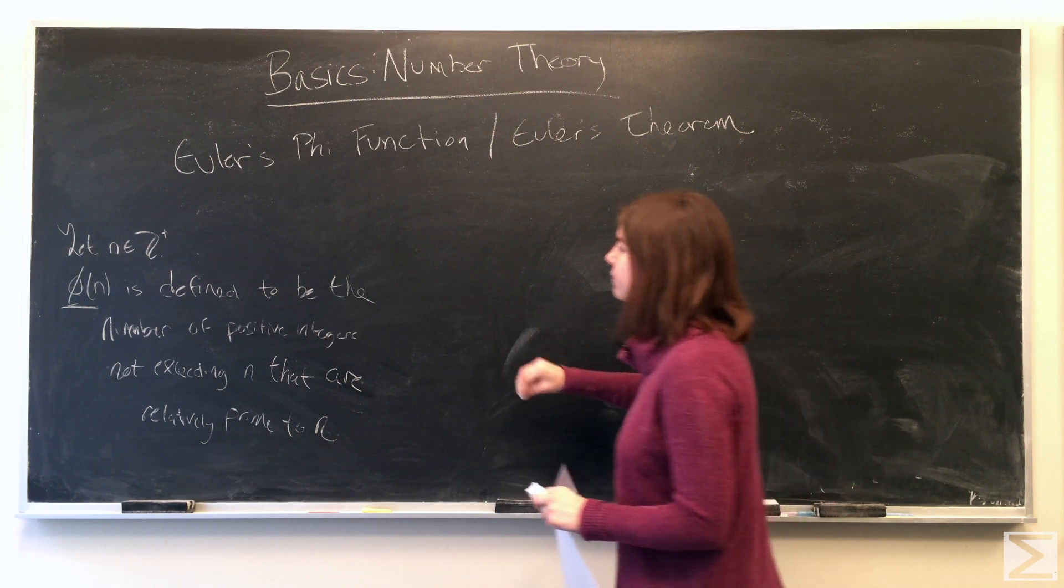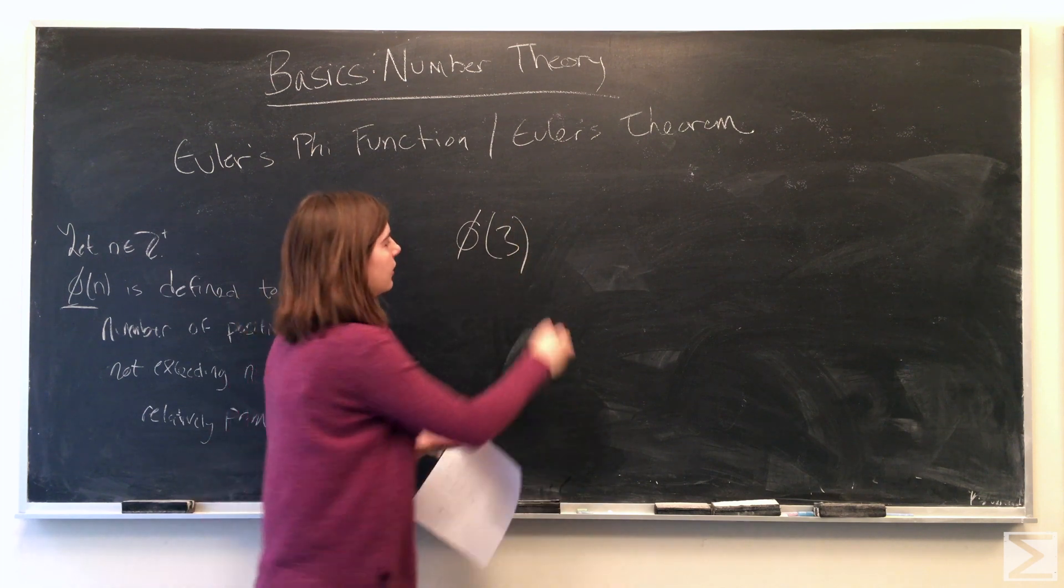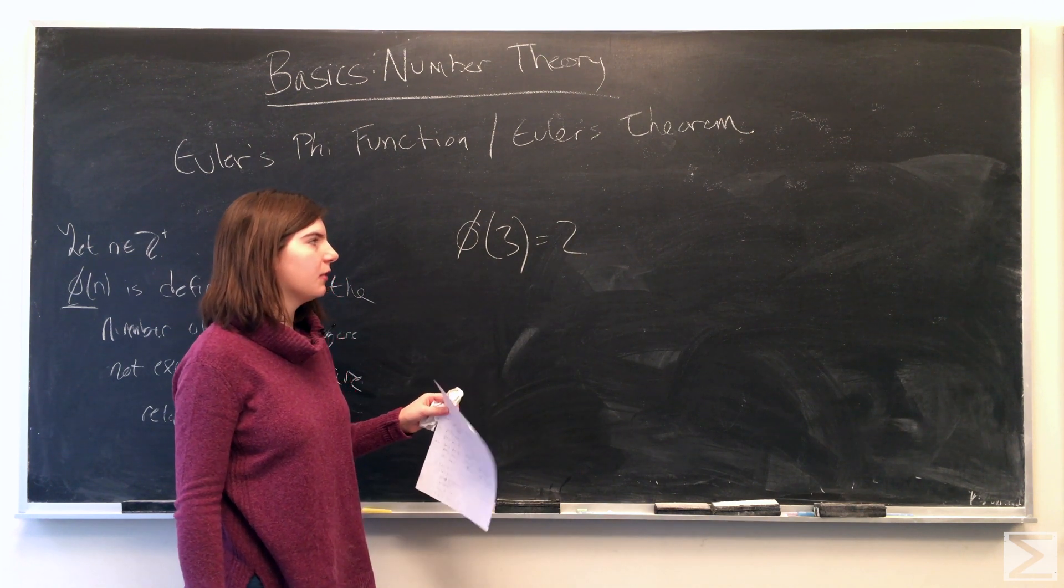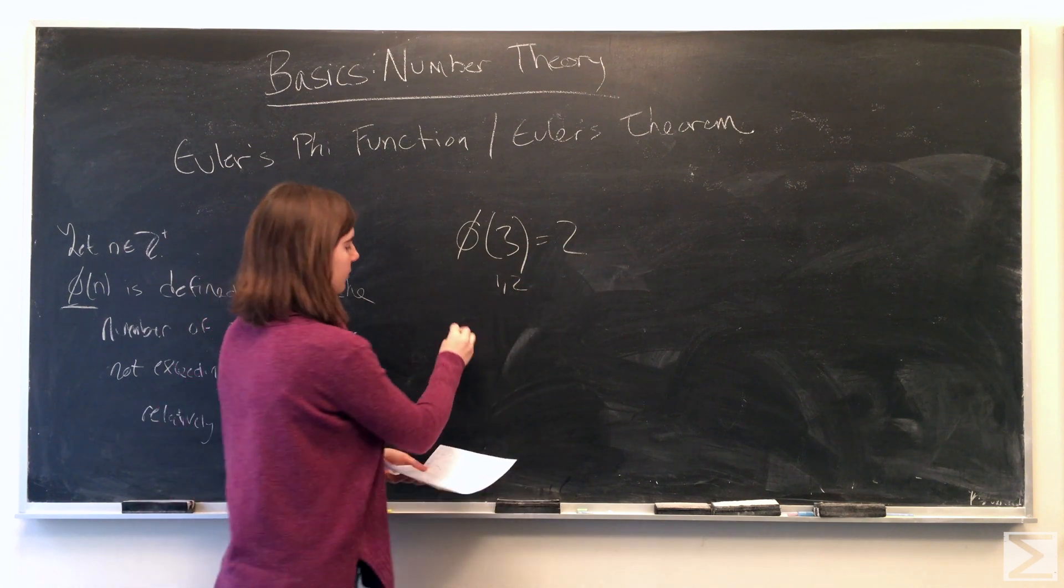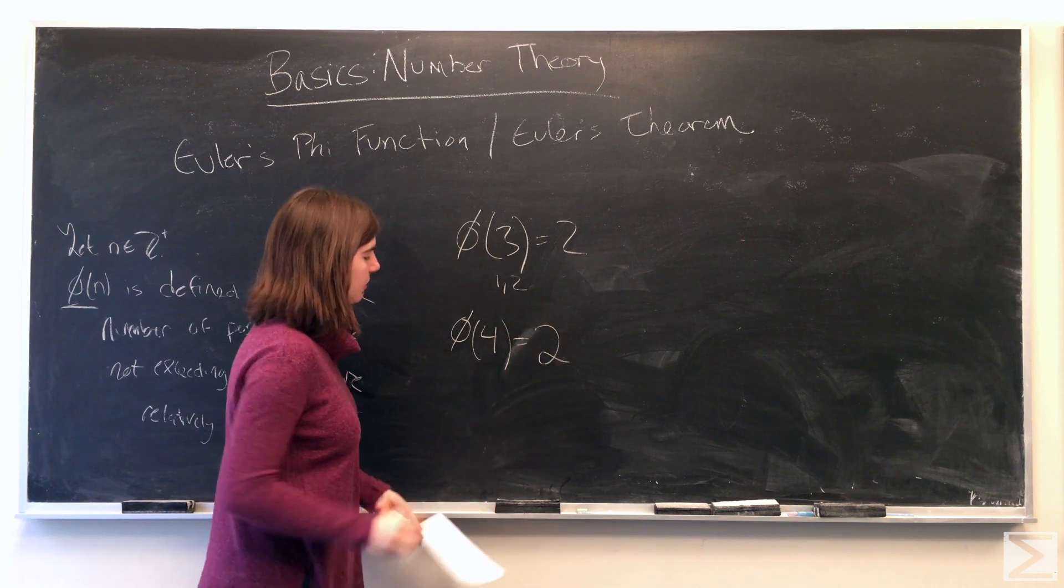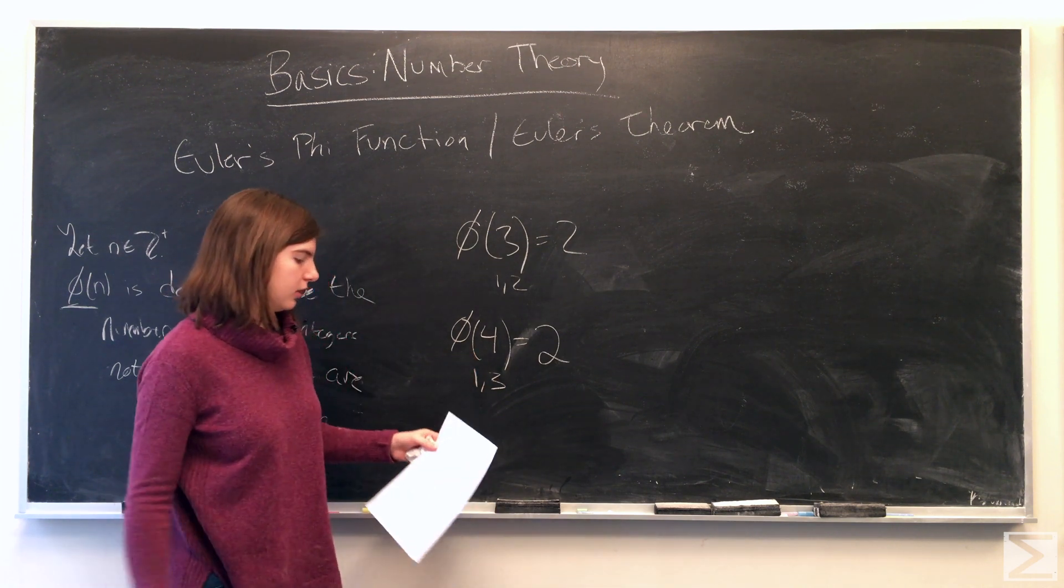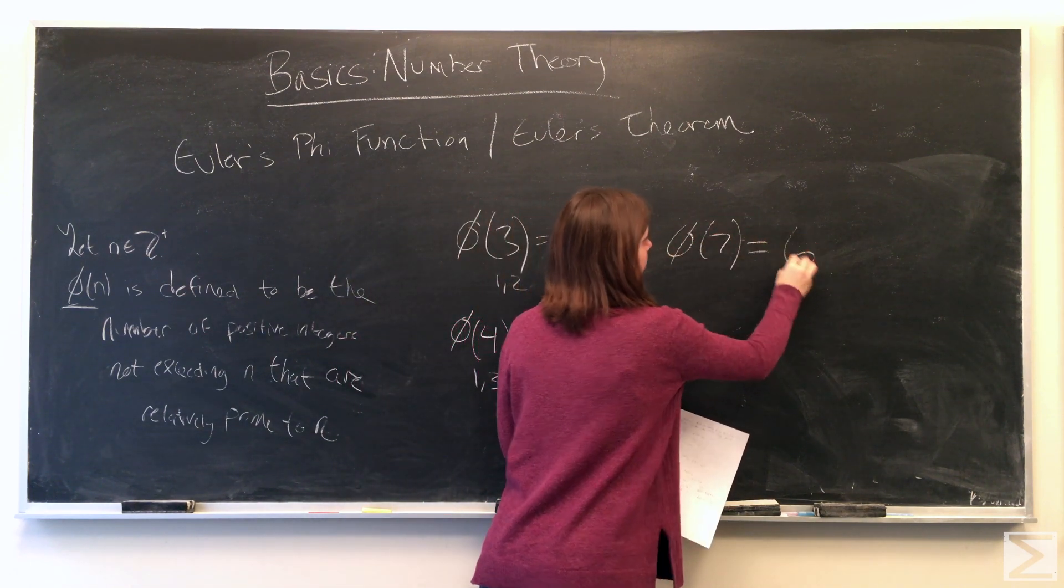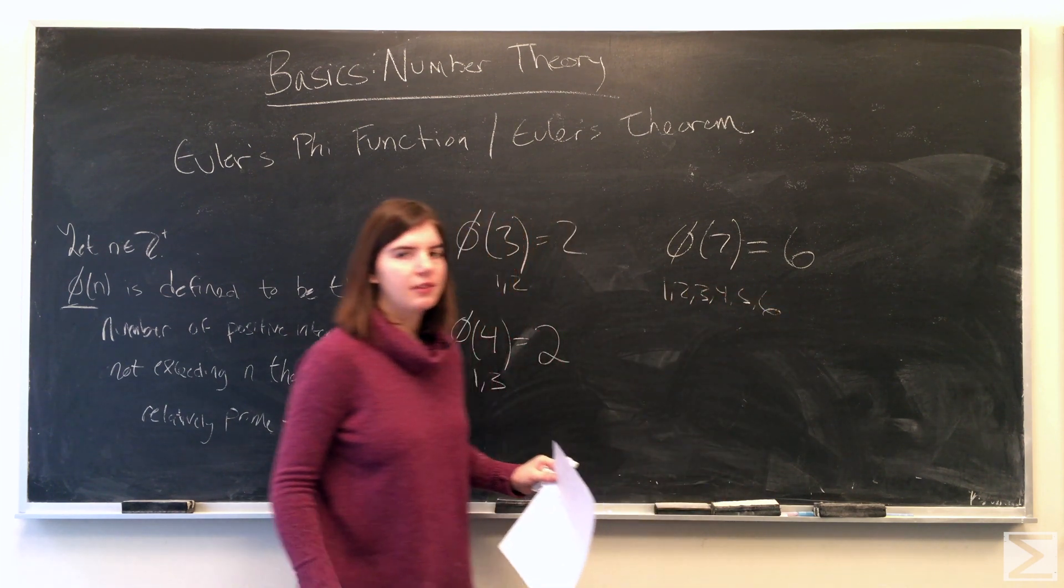For example, the phi of 3 is equal to 2 because the number of positive integers not exceeding 3 but are relatively prime to 3 are just 1 and 2, and there are 2. Another example, the phi of 4. This is also 2 because only 1 and 3 are relatively prime to 4. The phi of 7 is 6. 1, 2, 3, 4, 5, and 6 are all relatively prime to 7.